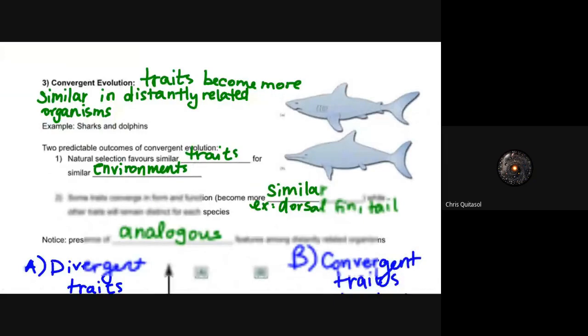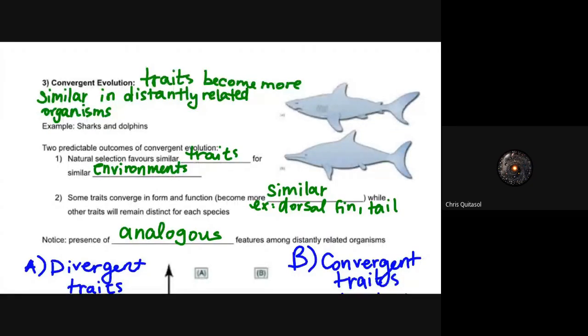Another type of evolution we'll look at is called convergent evolution, and these traits become more similar in distantly related organisms. Sharks and dolphins are a very good example. Sharks and dolphins do not really have too close of a related ancestor; they split off a very long time ago. But because of the environment which they live in, they have developed traits that are very similar to each other.